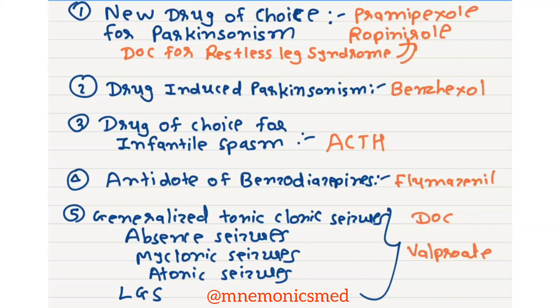Drug of choice for restless legs syndrome is Ropinirole. For drug-induced Parkinsonism, drug of choice is Benzhexol.